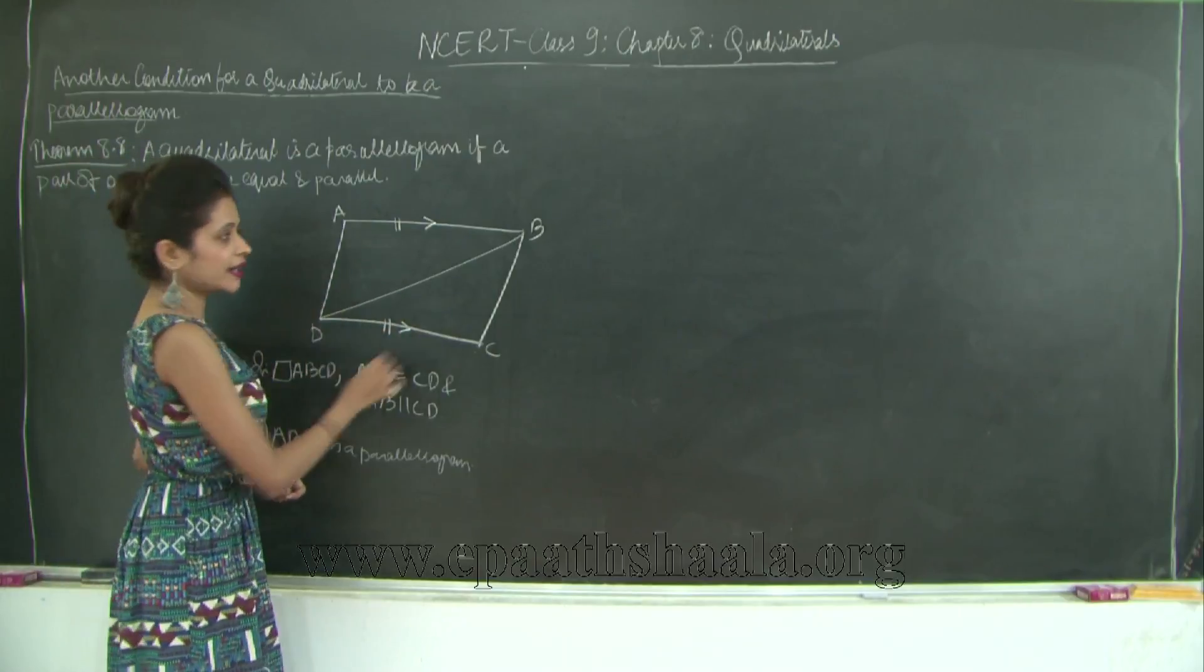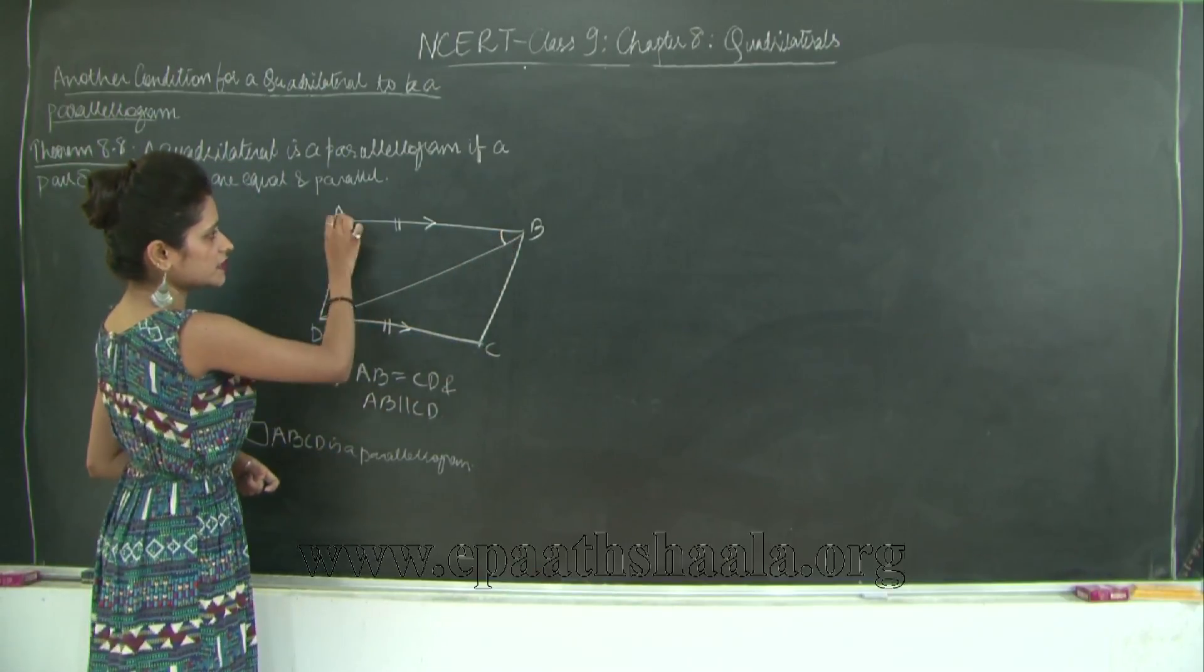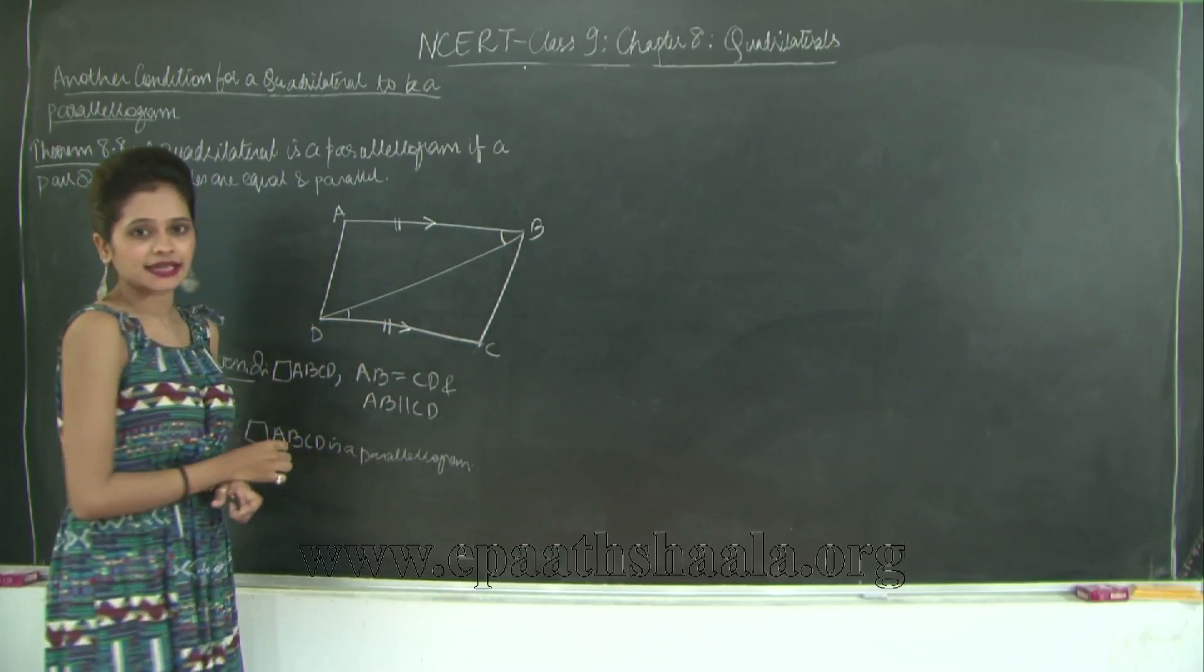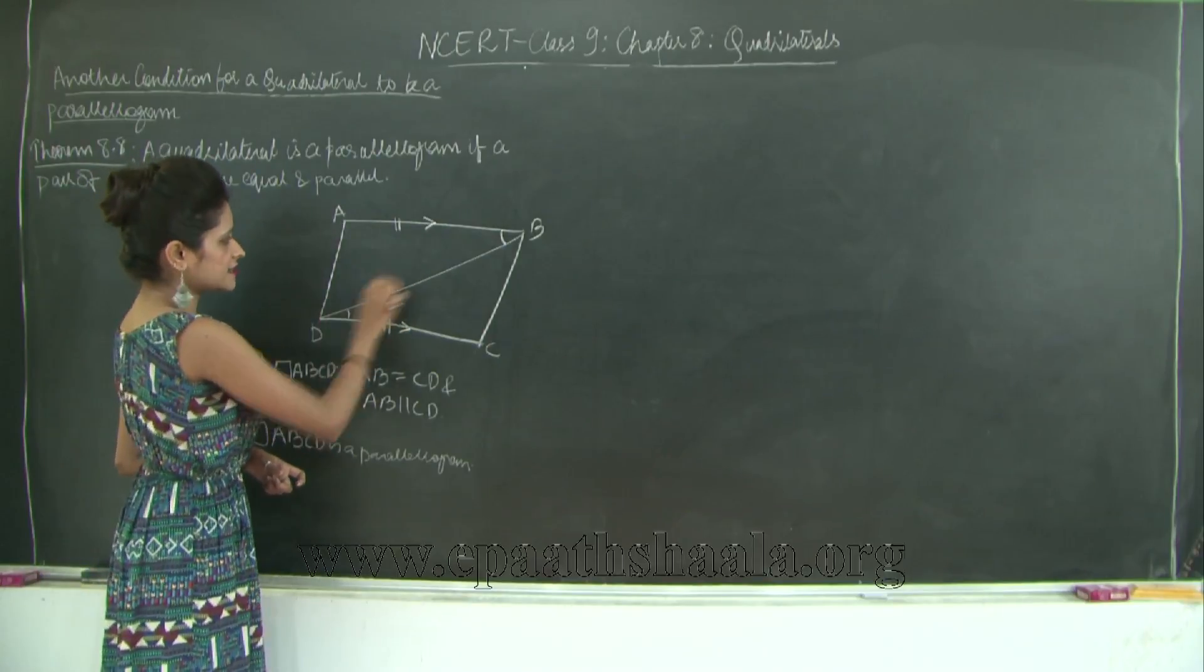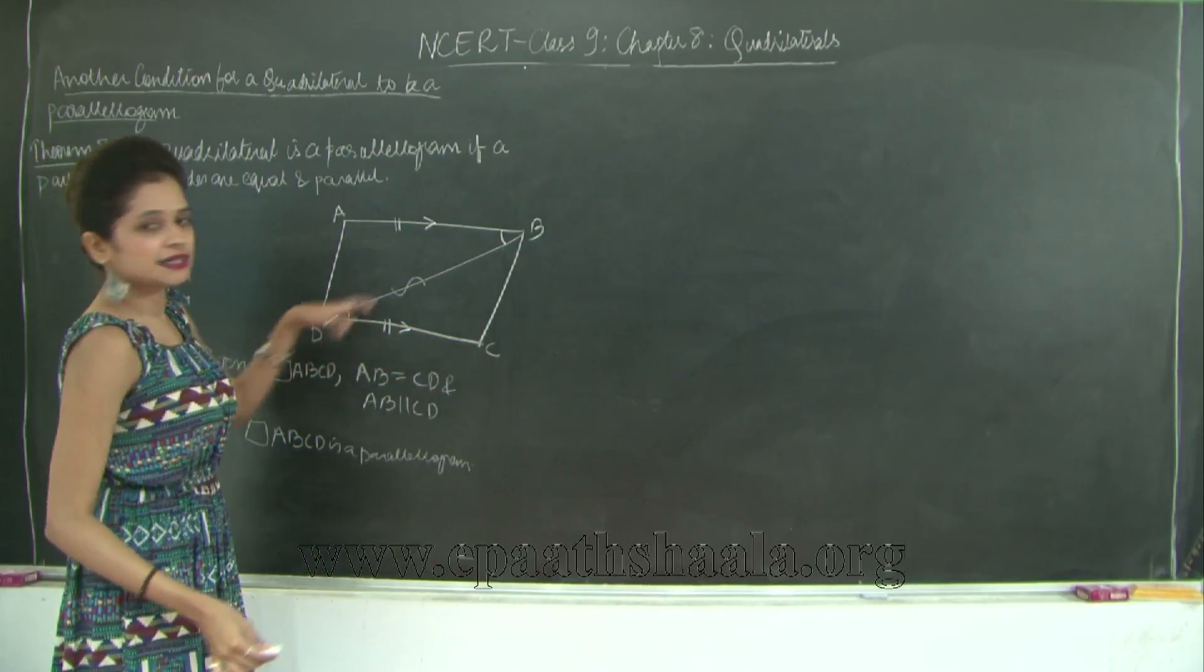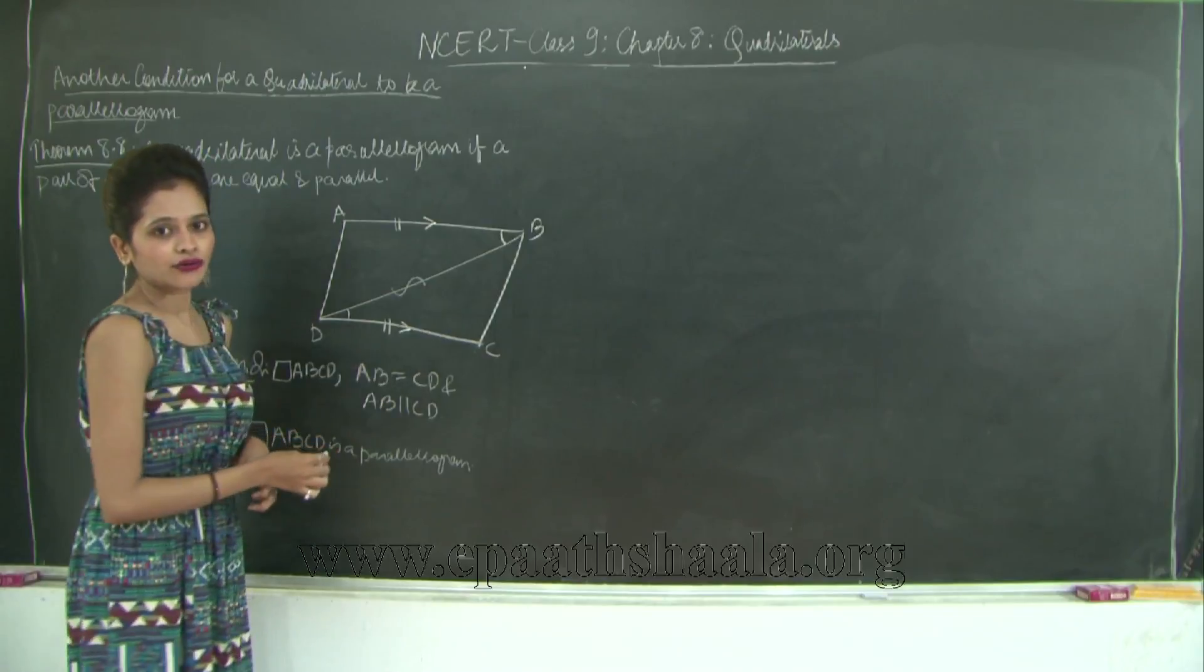Now in these two triangles, angle ABD is equal to angle CDB because AB is parallel to CD is given, therefore these form a pair of alternate angles. We have these two sides equal and this as the common side. Therefore the two triangles ADB and CDB are congruent to each other by side angle side test of congruence.